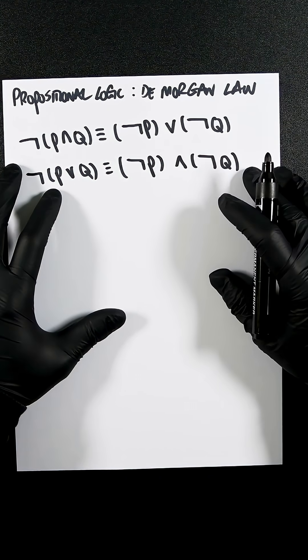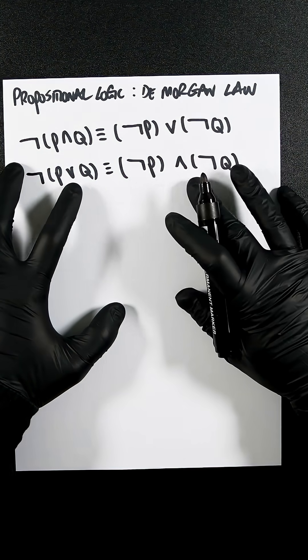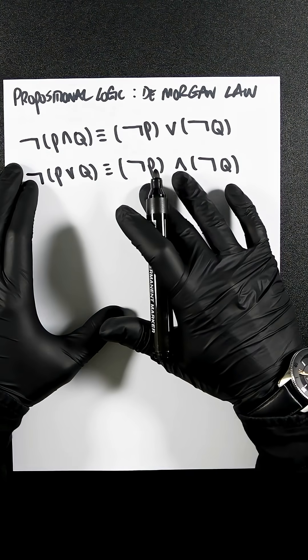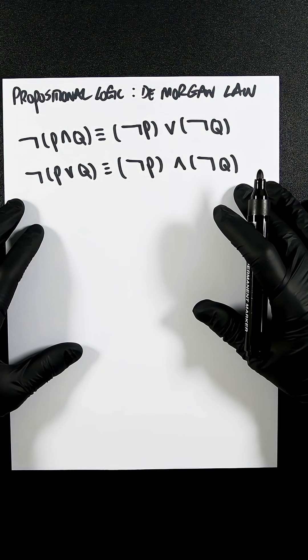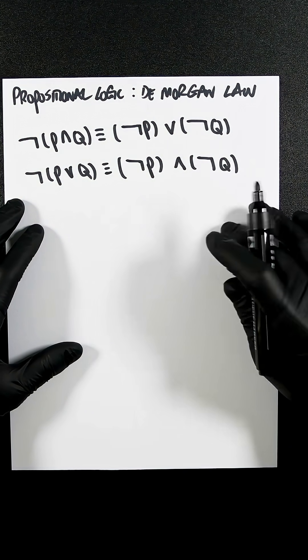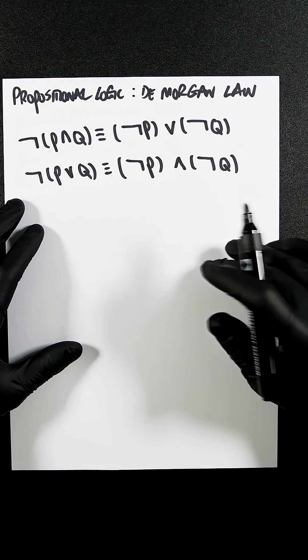Essentially, you're flipping these once you break out the bracket. If it's not both P and Q held, then at least one must fail. If it's not true that either P or Q holds, then both must fail.